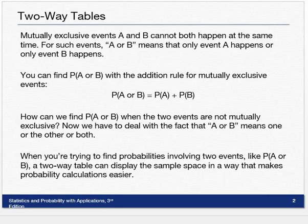But how do you find probability of A or B when the two events are not mutually exclusive? Now you have to deal with the fact that A or B means one or the other or both.